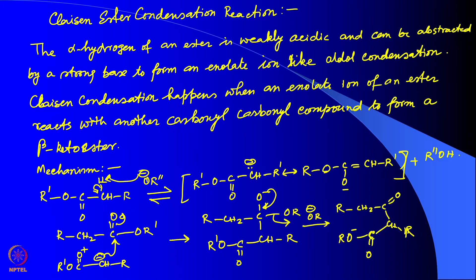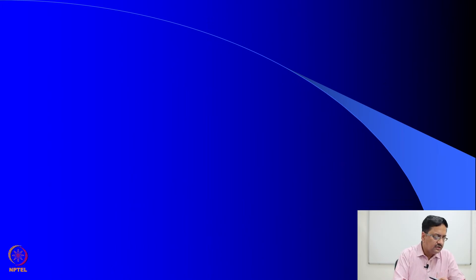With respect to this carbonyl carbon, this one is alpha and that is beta. So the product is a beta-keto ester. This is the product of a standard Claisen condensation reaction. Let us try to see with another example.